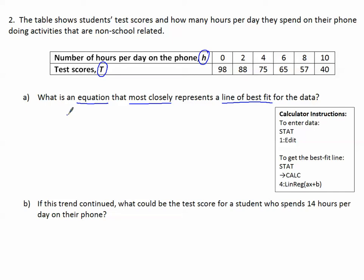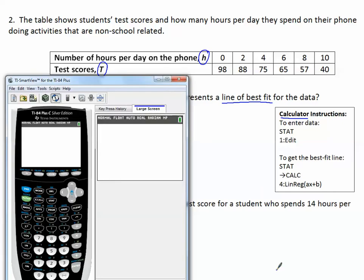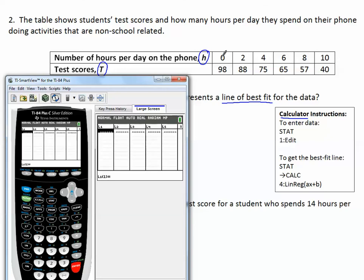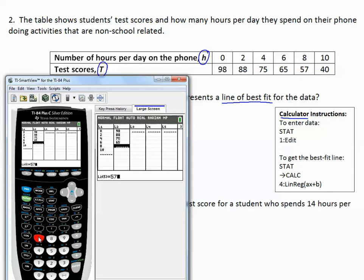We'll try to use y equals mx plus b. For a table of values, we can use the calculator to make this line of best fit. We start by pressing STAT then number one, Edit, to enter the data. Enter the x-values in List 1: 0, 2, 4, 6, 8, 10. Then press the right arrow and enter the y-values in List 2: 98, 88, 75, 65, 57, and 40.